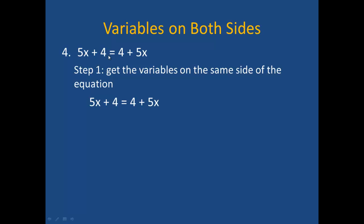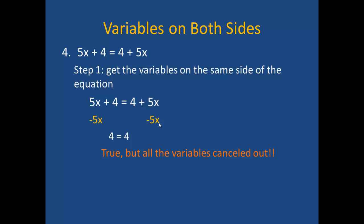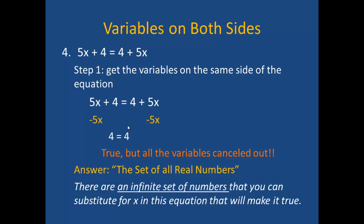In example number 4, I have 5x plus 4 equals 4 plus 5x. When I start by getting the variables on the same side and subtract 5x from both sides, you might notice that 5x minus 5x cancels on both sides, and I am left with 4 equals 4. My variables have cancelled out, but this is a true statement — 4 does equal 4. So in this case, my answer is the set of all real numbers, meaning there is an infinite set of numbers I can substitute for x. Therefore, instead of writing a number, you simply write the set of all real numbers.